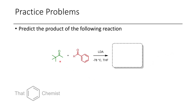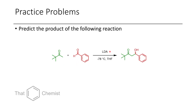In this first problem, we take this tert-butyl methyl ketone and treat it with benzaldehyde in the presence of LDA. Because we're using LDA instead of something like sodium methoxide or sodium hydroxide, we're afforded with the beta-hydroxy ketone rather than the alpha-beta-unsaturated ketone we would get under condensation conditions.